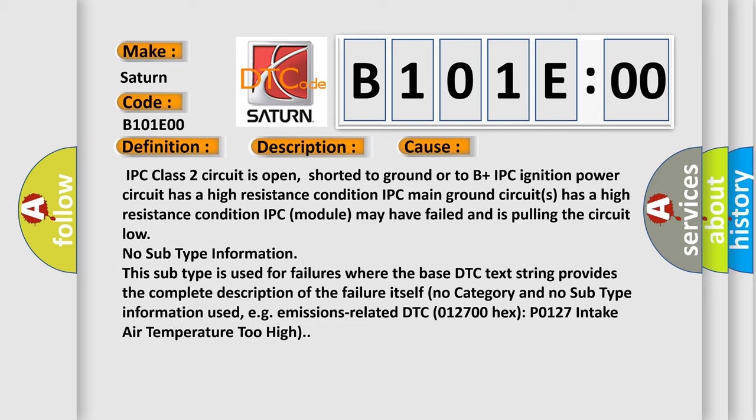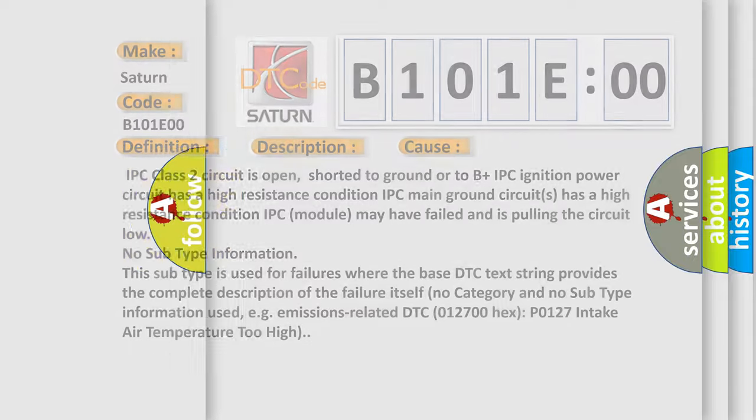No subtype information. This subtype is used for failures where the base DTC text string provides the complete description of the failure itself. No category and no subtype information used, for example, emissions-related DTC 012700 hex P0127 intake air temperature too high. The airbag reset website aims to provide information in 52 languages.